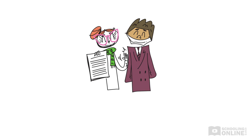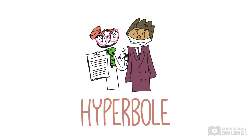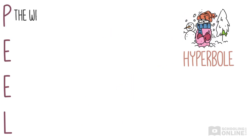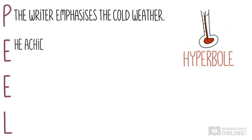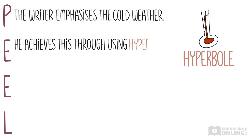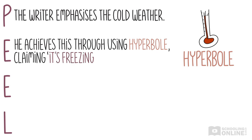We're starting to get the hang of PEEL analyses. Take a look at how we might analyze the hyperbole from lesson one: 'It's freezing outside.' The writer emphasises the cold weather. He achieves this through using hyperbole, claiming 'it's freezing outside.'